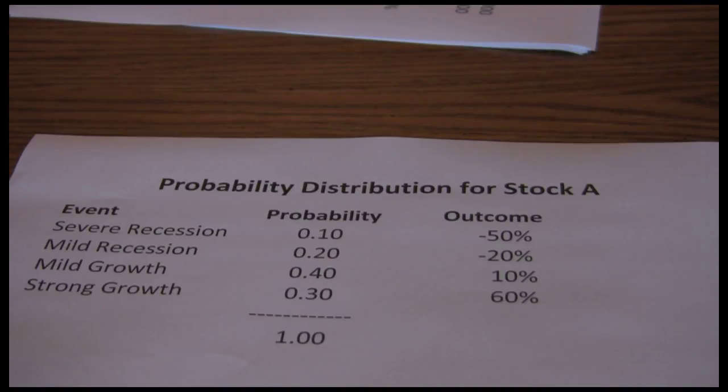Now when we calculate expected return, we want to think of expected return as the average rate of return that we would earn on an investment over a given holding period, typically one year, if we could repeat that holding period an infinite number of times. One problem is we don't get to repeat that holding period an infinite number of times, we only get one shot at it. The expected return is not the same as the actual return, it doesn't tell us what we're going to receive, it doesn't even tell us our most likely return, it just tells us the average rate of return that we should expect to get.